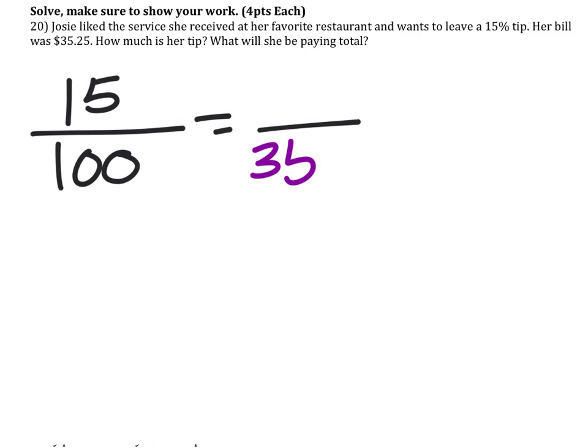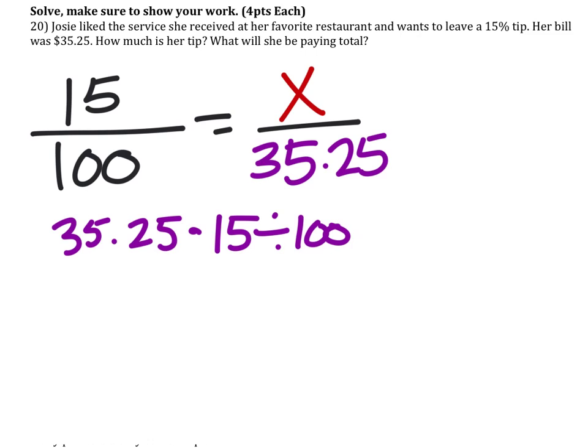The total bill was $35.25, so we want 15% of that. So we will solve for our unknown. 35.25 times 15 divided by 100. And it looks like her tip will be $5.29.